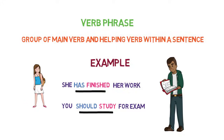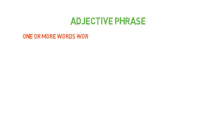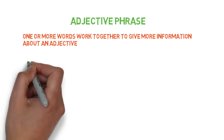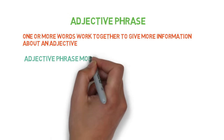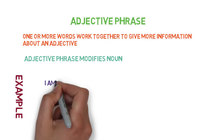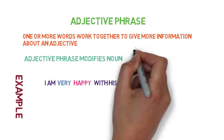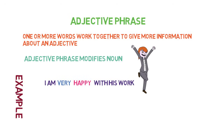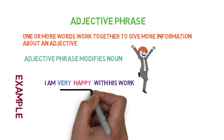Let's see the next type of phrase: adjective phrase. One or more words work together to give more information about an adjective. What does an adjective do? It modifies a noun. The adjective phrase does the same. For example, 'I am very happy with his work' — here 'happy' is an adjective and 'very' is just a helping word for the adjective 'happy,' so 'very happy' is an adjective phrase.